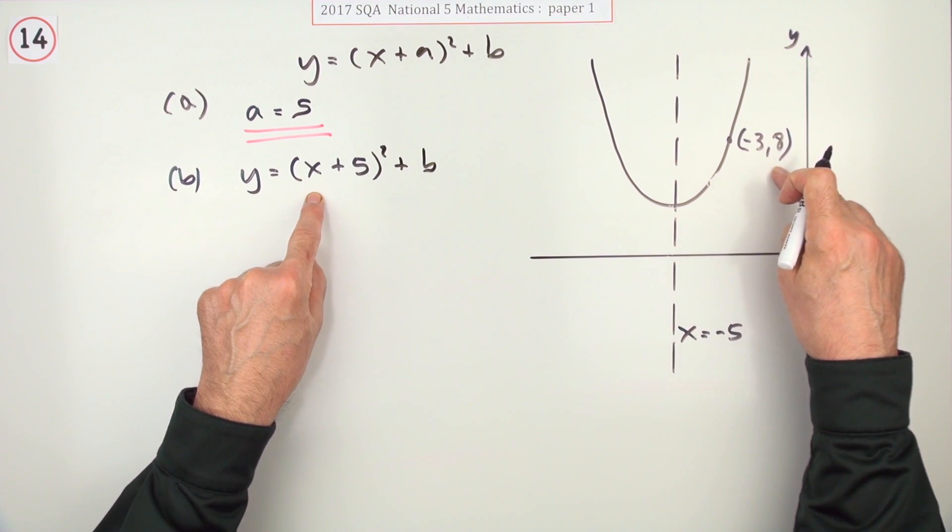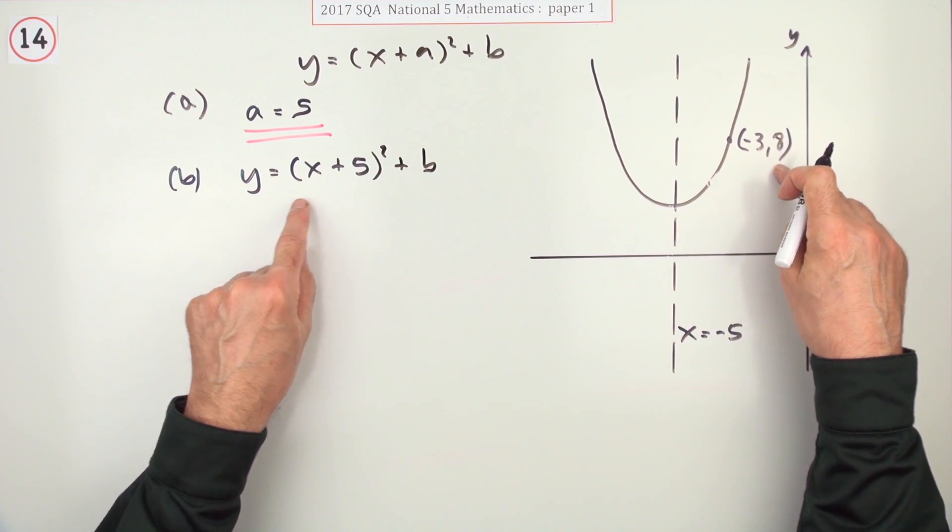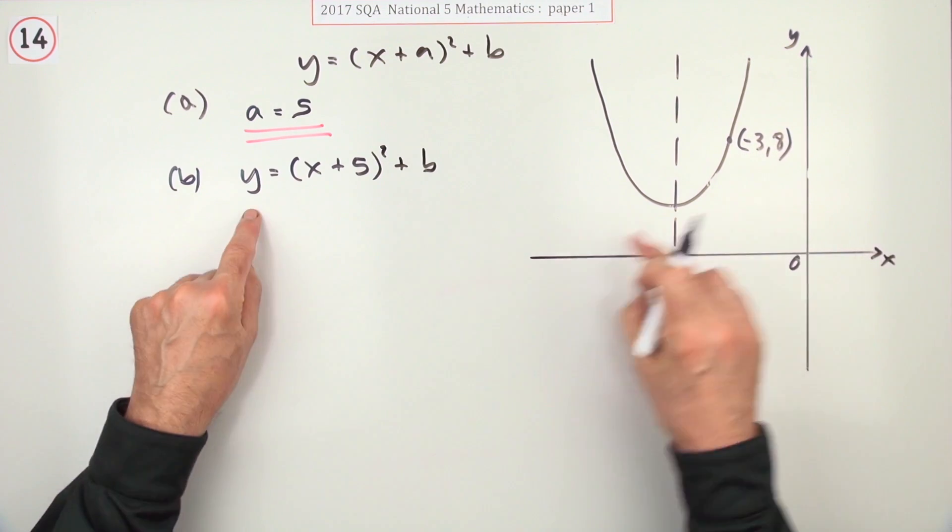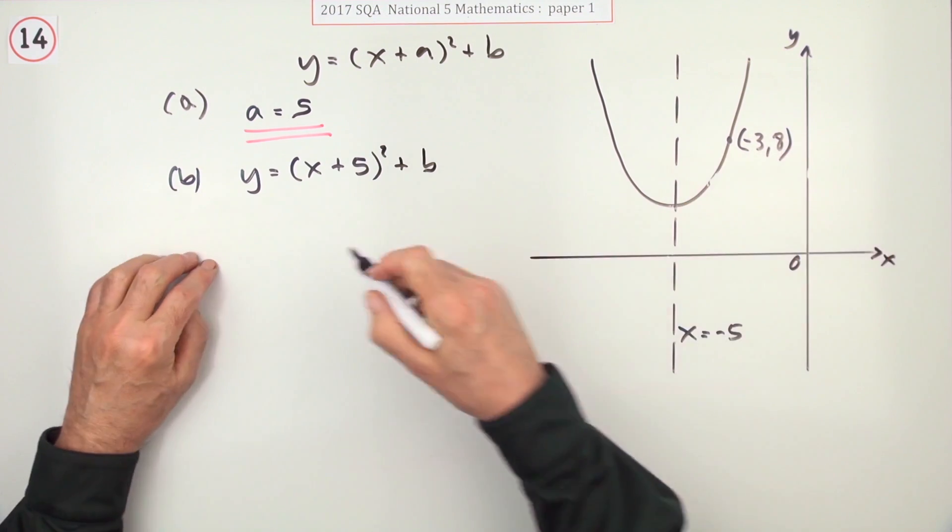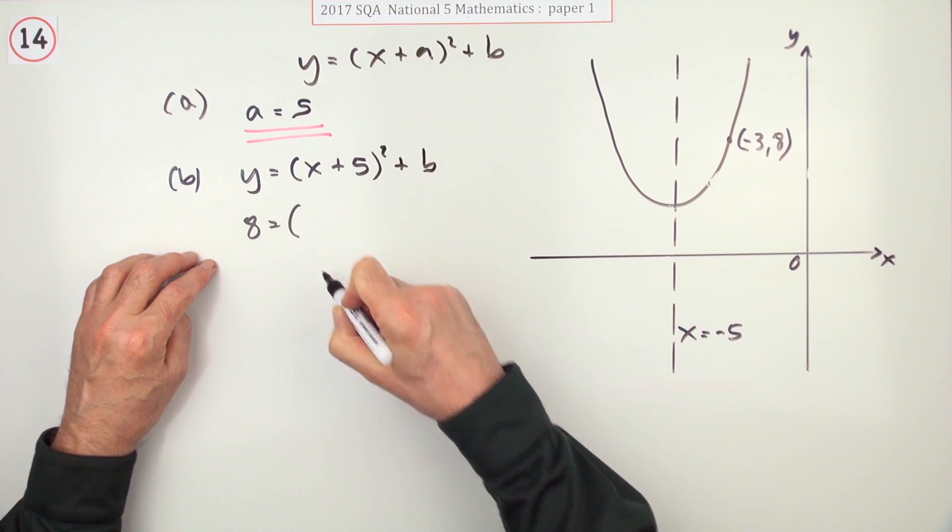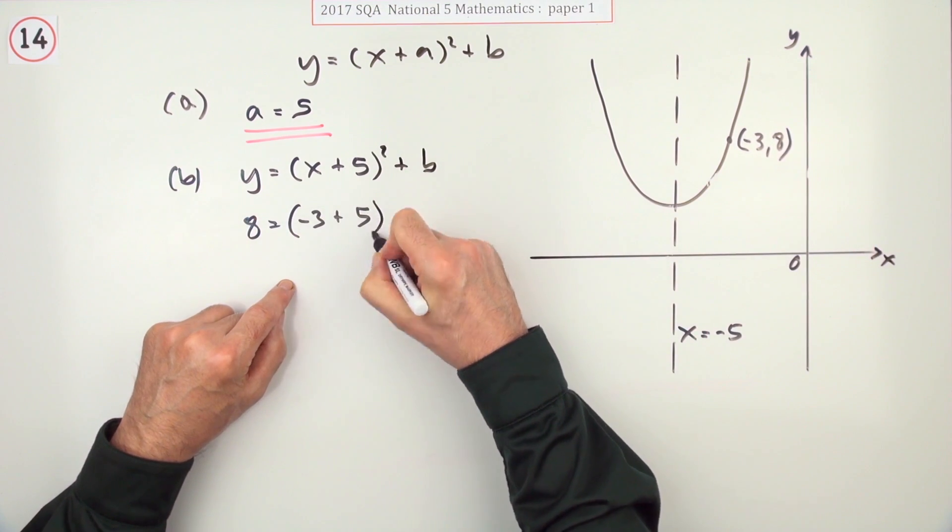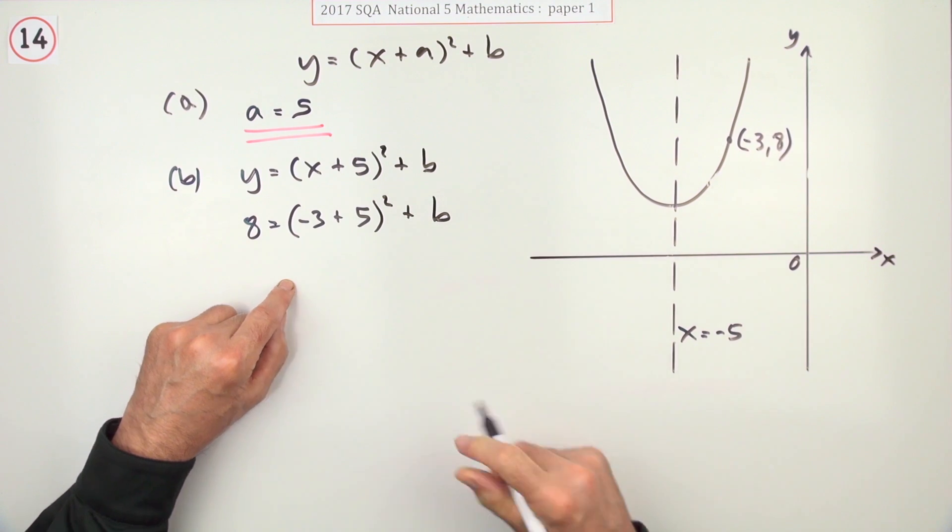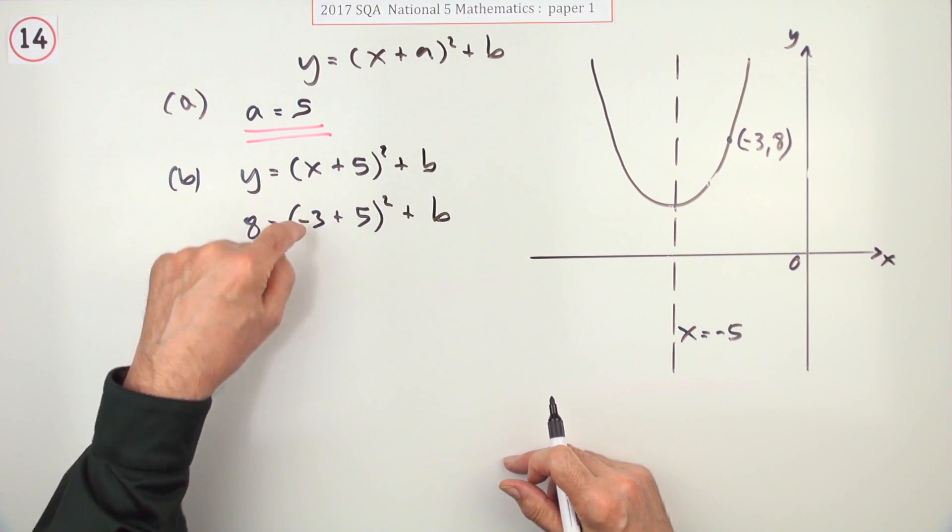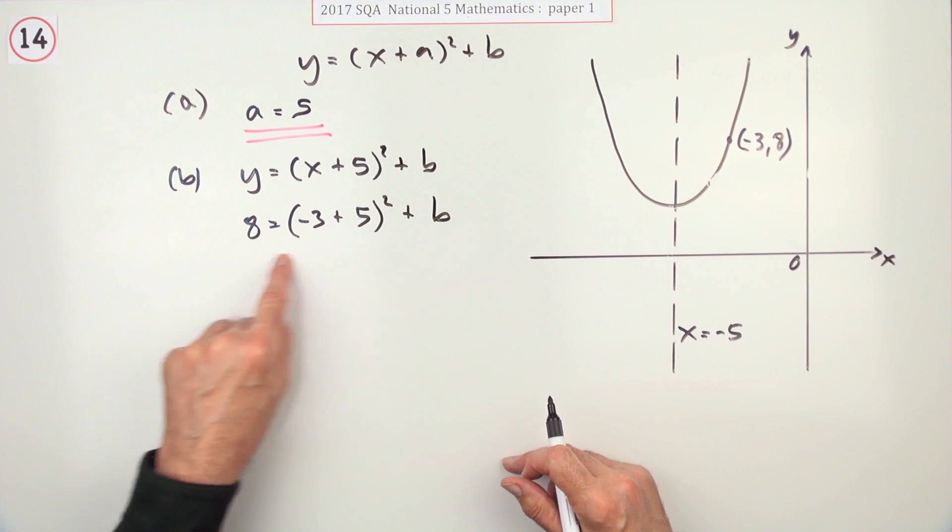Here's a pair here. You can put in the point negative 3, 8. Just make sure you put them in the correct place. The y is the 8. So I'll put that under there. 8 equals. The x is the negative 3. So I'll put it there. Replacing the y by 8 and the x by negative 3. Now you can work out b because that's all just numbers.